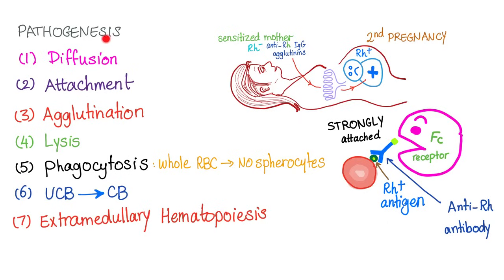During the second pregnancy, antibodies from mommy diffuse through the placenta into the baby. The antigen on the red blood cell attaches to the anti-RH antibody, then agglutination occurs — red blood cells stick together with the agglutinins. Then lysis: macrophages produce lytic enzymes to destroy these red blood cells. The Fc receptor of IgG on the splenic macrophages recognizes the Fc portion on the agglutinins, and you are in bad trouble.